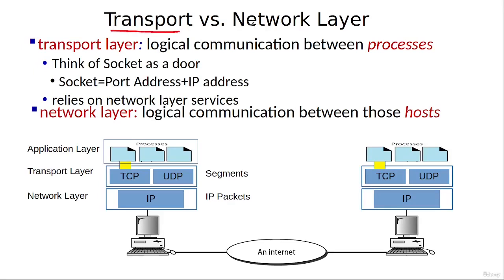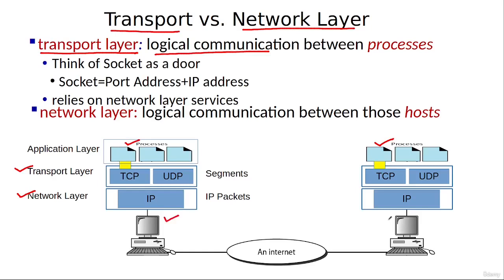The transport layer depends upon the network layer because the network layer is just below the transport layer, so the transport layer uses the services of the network layer. For example, if one process is communicating with another process, the logical communication between these two processes is handled by the transport layer. But the communication between the source host and the destination host — this host-to-host communication — is handled by the network layer.